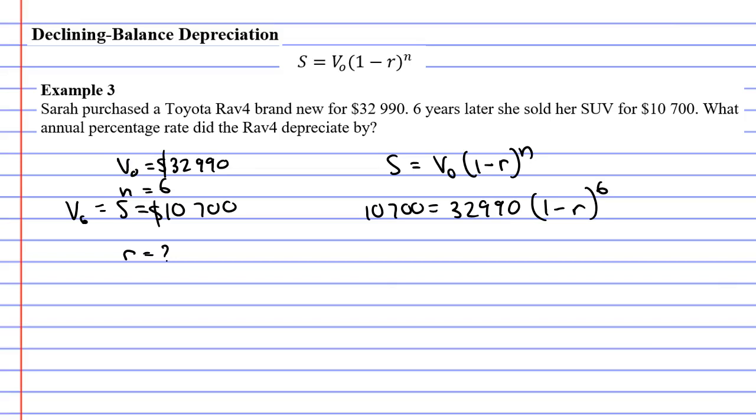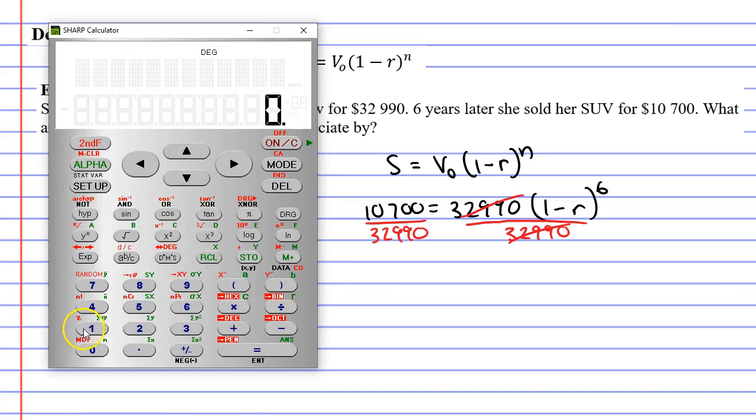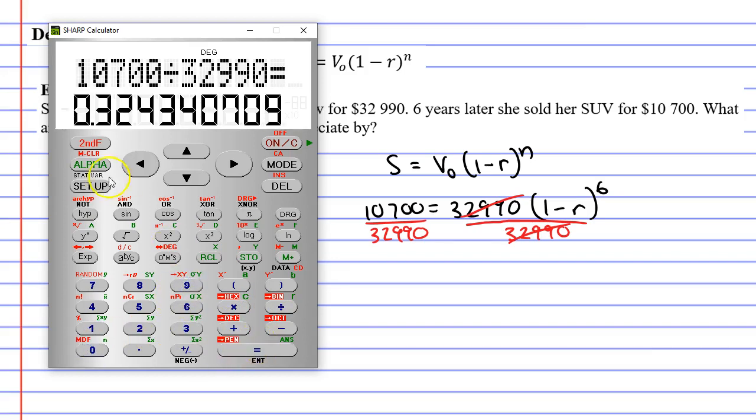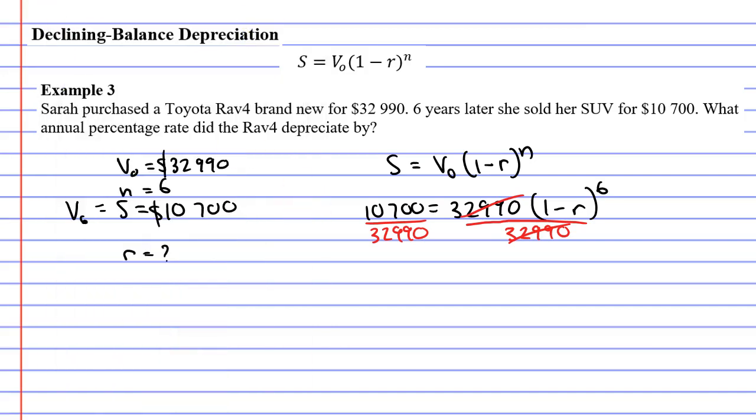We're going to have to solve this similar to how we've done the topic on equations. We're going to have to do the same thing to both sides, and we're going to have to do opposite operations. The first thing I'm going to do is divide both sides by $32,990. I'm going to do that because it's going to cancel out these two. Now, if I bring my calculator up and go $10,700 divided by $32,990, I'm going to get this really nasty decimal. I don't want that. So to avoid that, you can just leave it as a fraction.